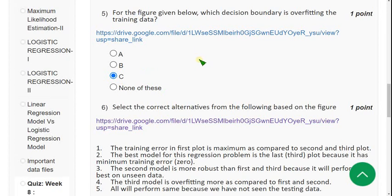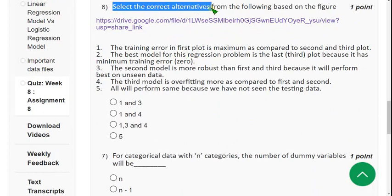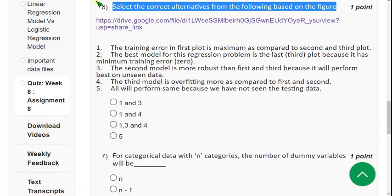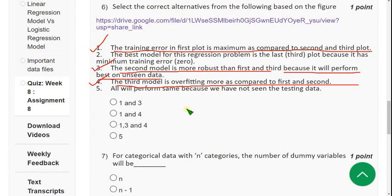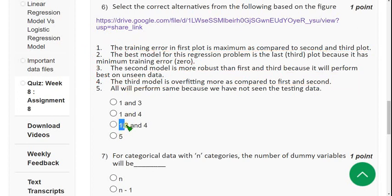Moving on to the sixth question. Select the correct alternatives from the following based on the figure. Same figure like fifth question, they are asking select the correct alternatives. For sixth question the correct statements are the first one: The training error in first plot is maximum compared to the second and third. The next option is third option: The second model is more robust than first and third because it will perform best on unseen data. And the other statement is fourth option: The third model is overfitting more as compared to the first and second. So third model is overfitting, second one is more robust than other, first one has maximum training error than remaining. So the answer is options 1, 3, and 4 are correct.